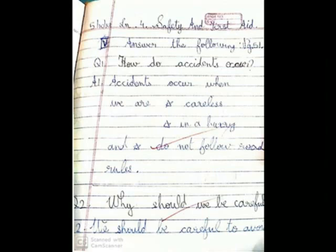Lesson 4 Science — safety and road safety. Question 1: How do accidents occur? Accidents occur when we are callous, in a hurry, and do not follow our rules. Question 2: Why should we be careful?